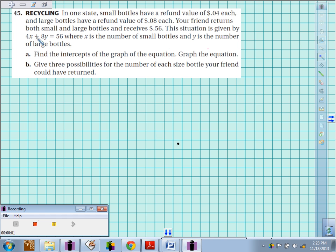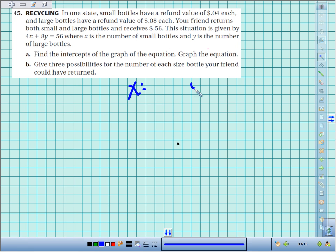So we get 4 cents for every small bottle plus 8 cents for every large bottle equals a total of 56 cents. We're supposed to find the intercepts of the graph of the equation and then graph it. Okay, so my x and my y. If I want my x-intercept, I make y zero. And we take 56 divided by 4. And 56 divided by 4, I believe, is 14 for my x-intercept.